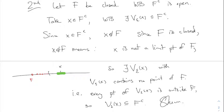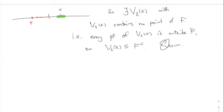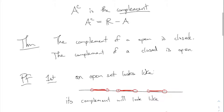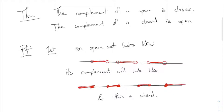This proof is mostly definitions but a little tricky. The moral of the story: the complement of an open set is closed, the complement of a closed set is open. This is the big relationship between open sets and closed sets.